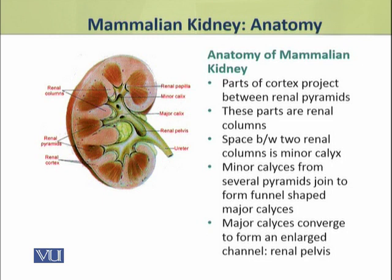Parts of the cortex also project between the renal pyramids; these parts are called renal columns. The space between the renal columns is called the minor calyx.